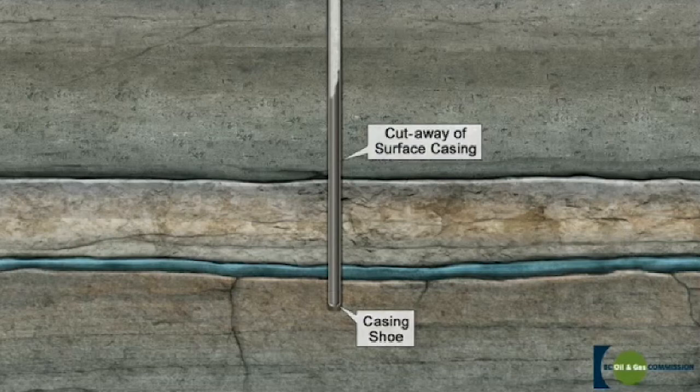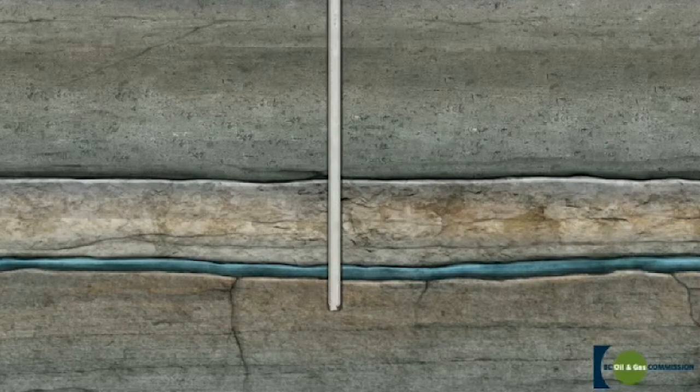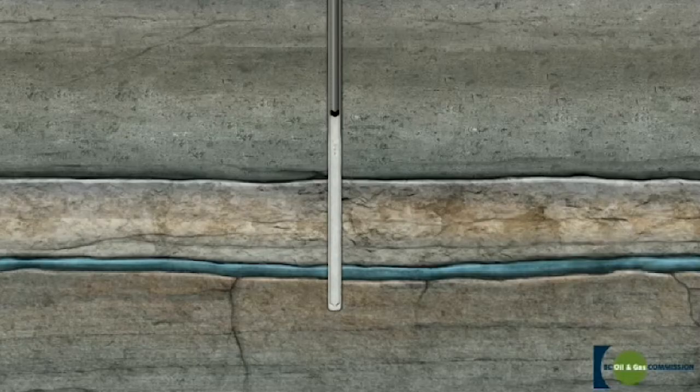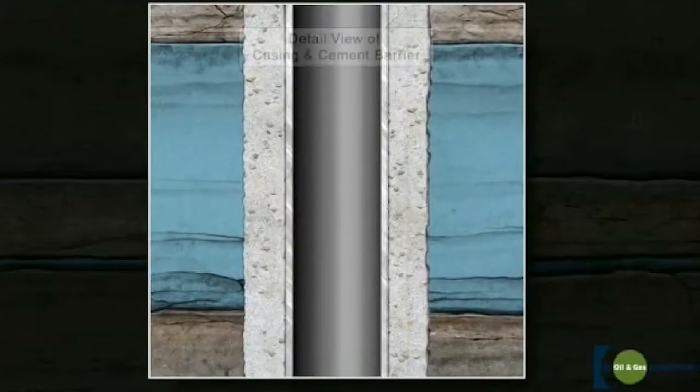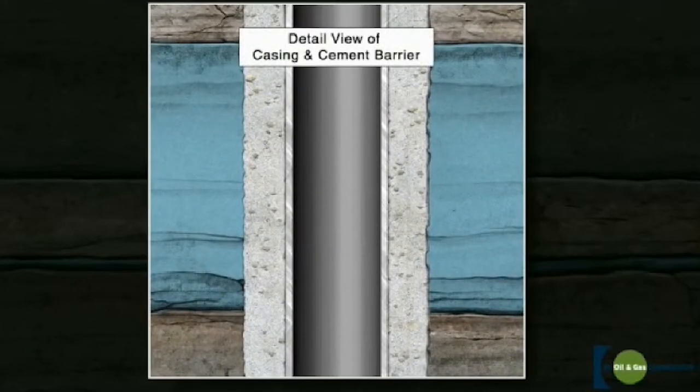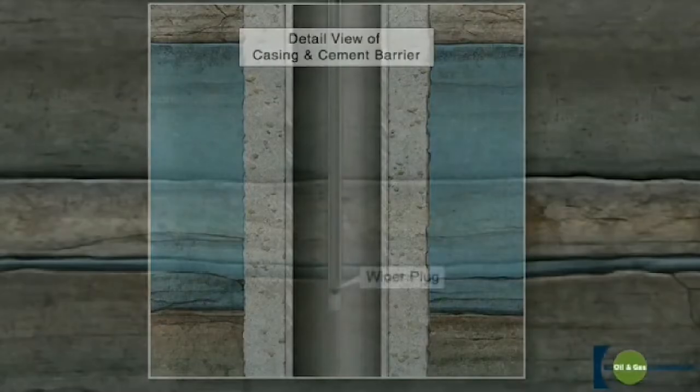Then cement is pumped down the casing and out through the opening of the shoe at the bottom of the casing. It is then forced up between the casing and the hole, sealing off the wellbore from the fresh water. The cementing process prevents contamination of the fresh water aquifers.